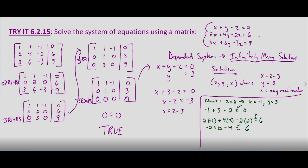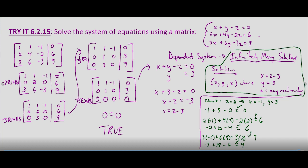Our third equation: three times negative one, plus six times three, minus three times two — does that equal nine? That's negative three plus eighteen, minus six. That's fifteen minus six, which does indeed equal nine — so that checks as well. Our solution is there are infinitely many solutions: based on z being any real number, x equals z minus three, and y equals three.